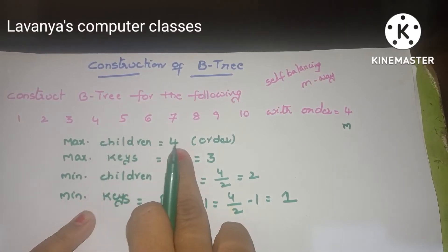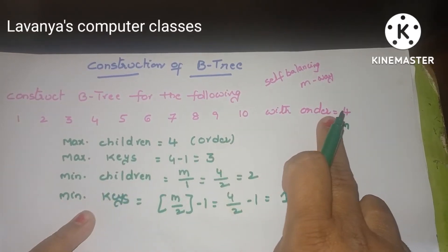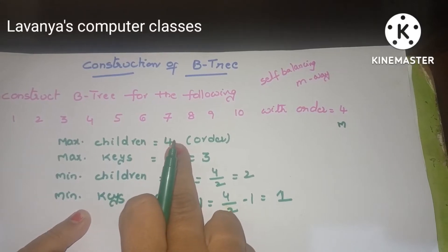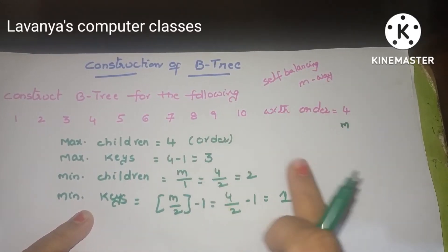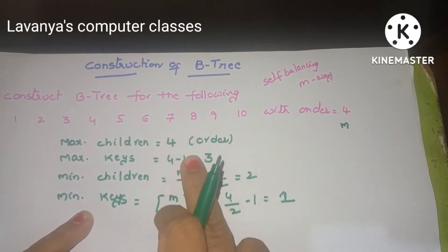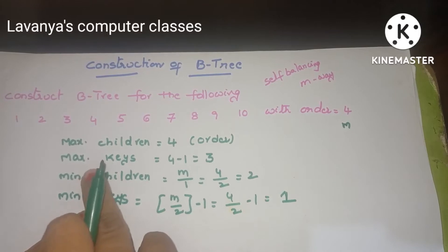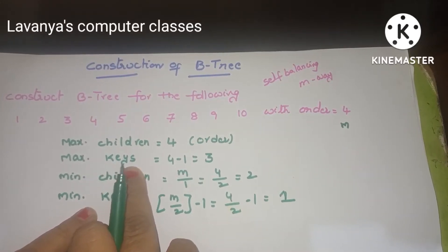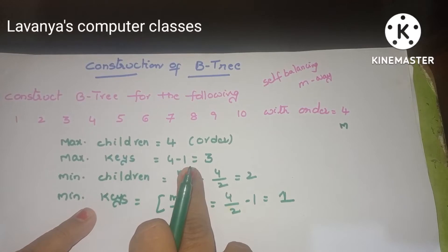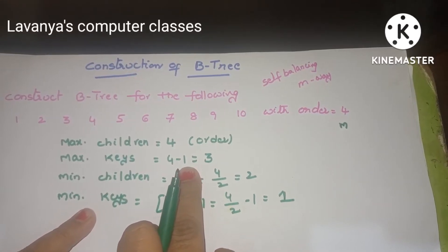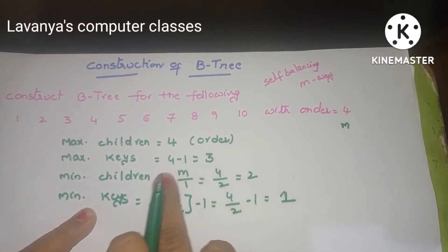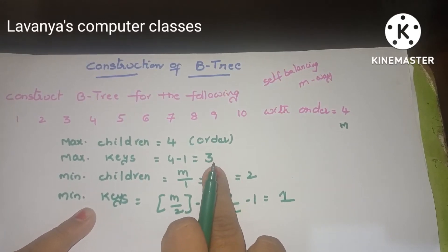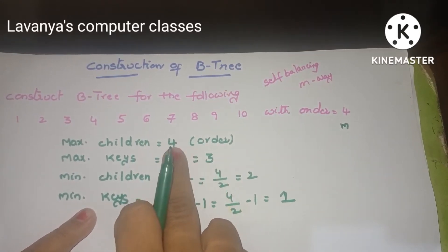What is the maximum number of children? Maximum children is equal to the order. If order equals 4, maximum children is also 4 — that means one node can have up to 4 children, or 4 pointers. What is the maximum number of keys? Maximum keys is order minus 1, so 4 minus 1 equals 3. So 3 is the maximum keys and 4 is the maximum children.